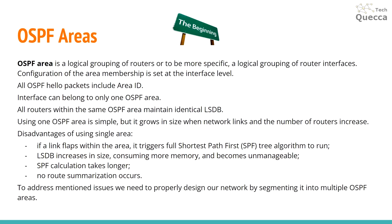First things first, let's start from the definition. An OSPF area is the logical grouping of routers, or to be more specific, the logical grouping of router interfaces. Configuration of area membership is set at the interface level. If you capture an OSPF Hello packet on the link between routers, you can find that each Hello packet includes an area ID. An interface on the router can belong to only one OSPF area.